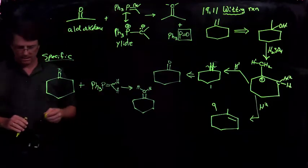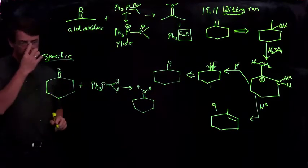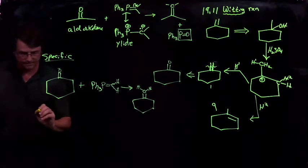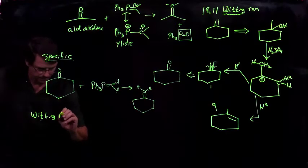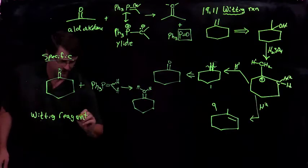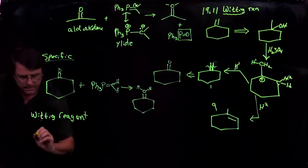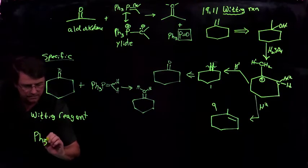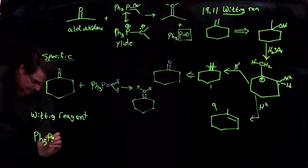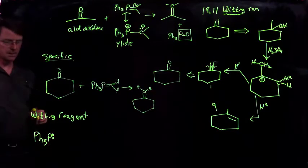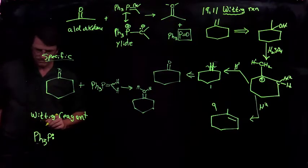Now, the question is, how do we get at the Wittig reagent? And it turns out those are pretty easy. The Wittig reagent. We take triphenyl phosphine. It's an air stable aromatic phosphine. Phosphorus is right under nitrogen. So it's a little bit like ammonia or an amine.